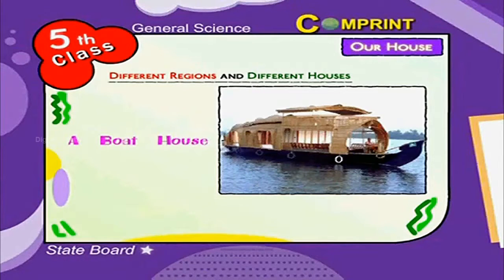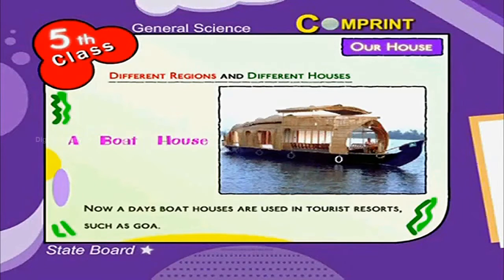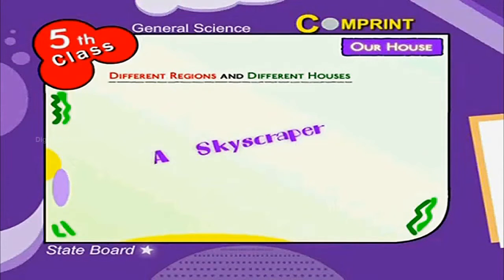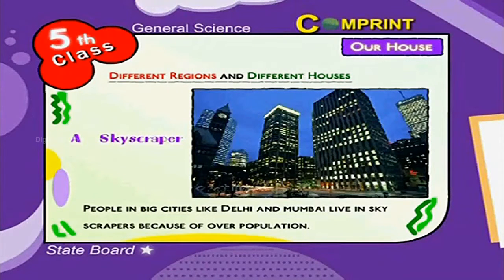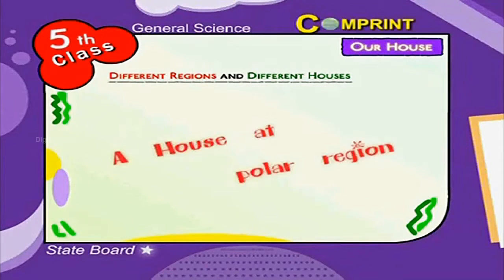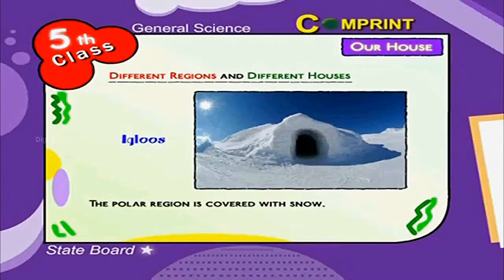Nowadays, boat houses are also used in tourist resorts such as Goa. A skyscraper: People in big cities like Delhi and Mumbai live in skyscrapers because of overpopulation.